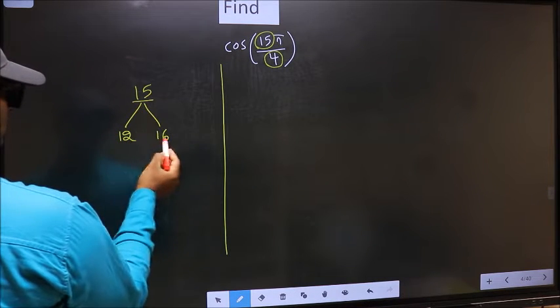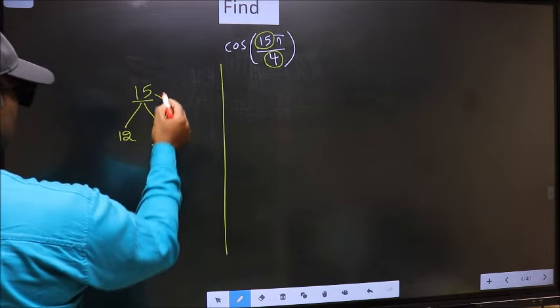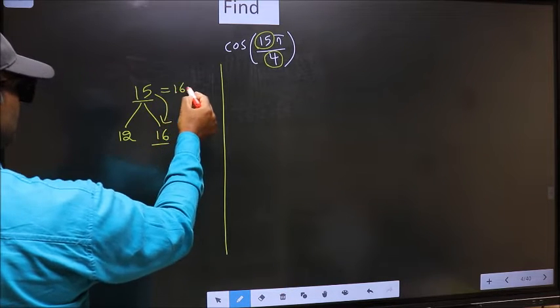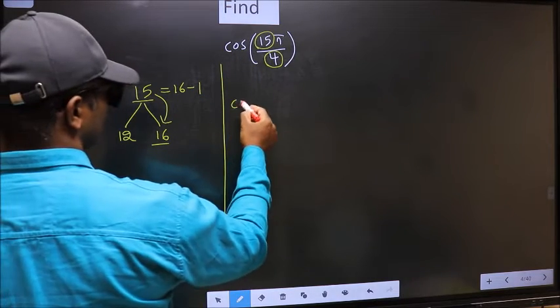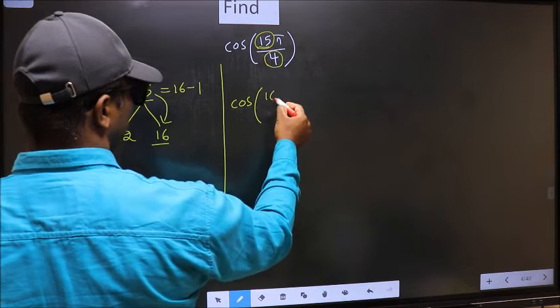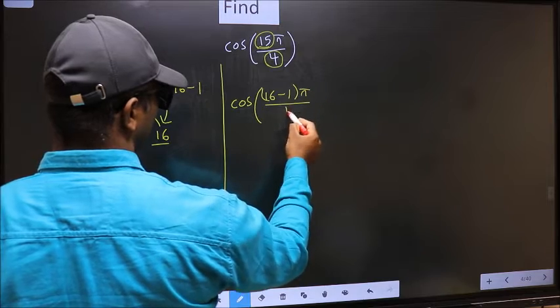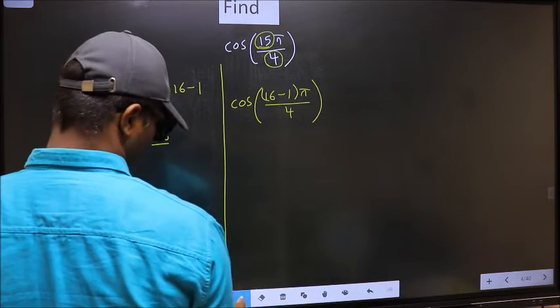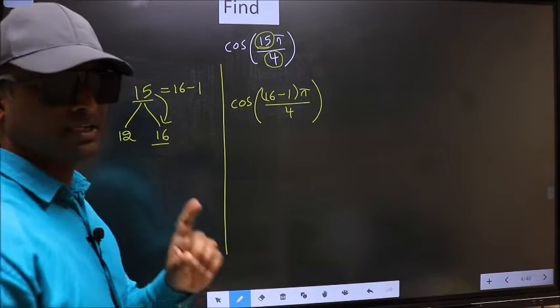15 is close to 16. So 15 should be written as 16-1. This becomes cos(16-1)π/4. This is your step 1.